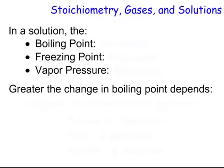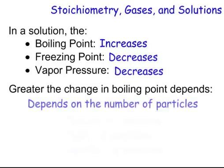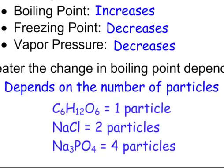When we make solutions, the boiling point goes where? Up. Where does the freezing point go? Down. Where does the vapor pressure go? Down. And so what does the change in the boiling point depend on? It depends on the number of particles. And we call that the van't Hoff factor. And take a look at our van't Hoff factors here. Sugar breaks up into one particle. Salt breaks up into an Na plus and a Cl minus, two particles. And Na3PO4 breaks up into four big particles. Three sodium ions and one phosphate.